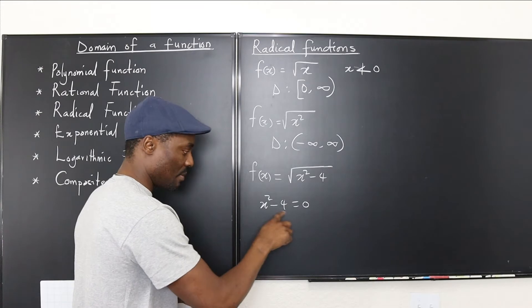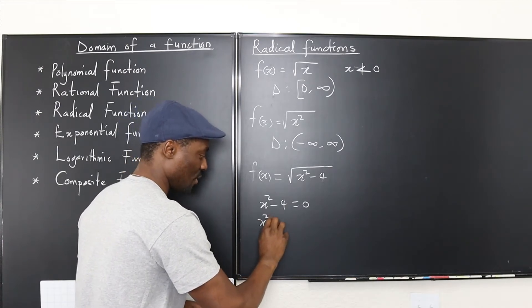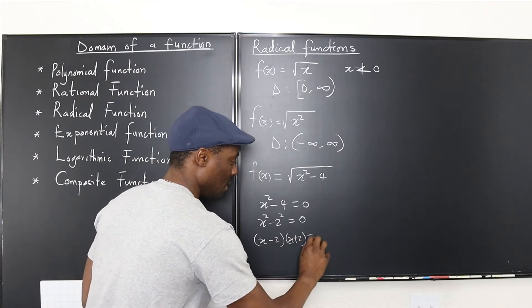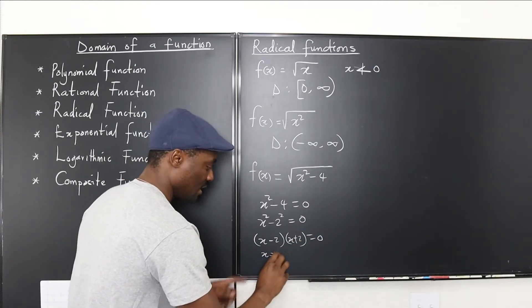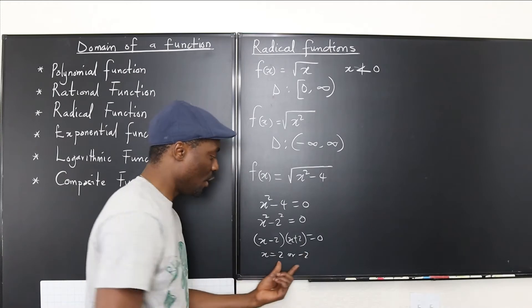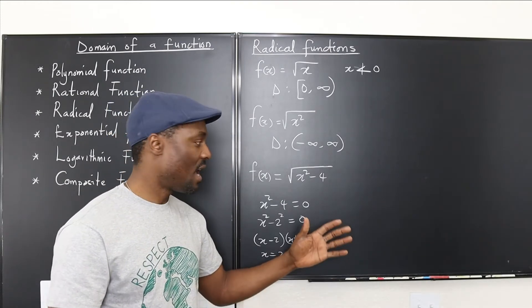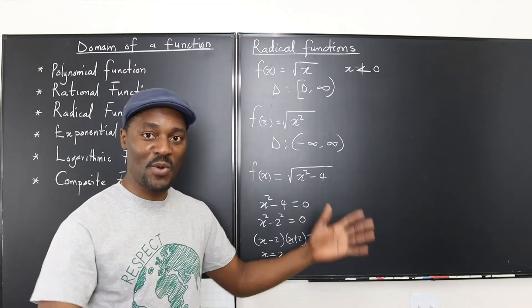And then you say, remember this would be a difference of two squares, that's x squared minus 2 squared equals zero, so you have x minus 2 times x plus 2 equals zero, which gives you x is equal to 2 or negative 2. So these two values are important for you to determine whether you are going to use them or not use them, what direction you're going to go.